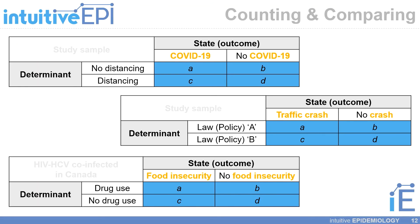And while various statistical methods can be used to tease out the true relationships between these variables, at its core is the two-by-two table where we count to compare the number of people who experience a given outcome based on their exposure status.